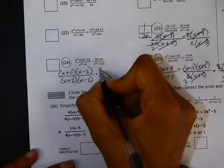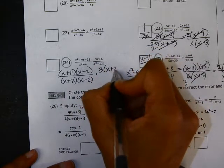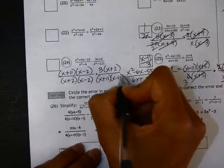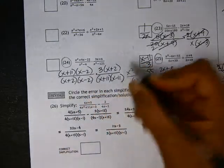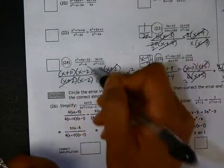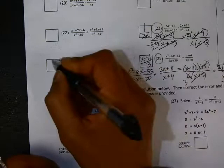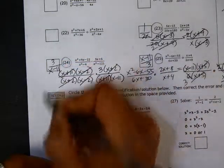3x plus 6 has a common factor of 3. And x squared minus 121, another difference of squares, x plus 11, x minus 11. We can cancel the x plus 2's, the x minus 2's, the x plus 11's, and we're left with 3 over x minus 11.